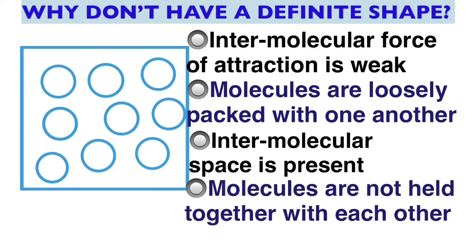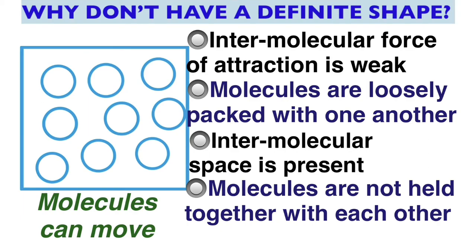As the molecules are not held with one another compactly they can move away from one another. This is the reason why liquids do not have a definite shape but they can take the shape of the container in which they will be kept.